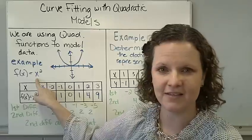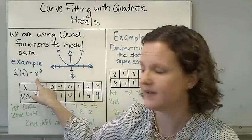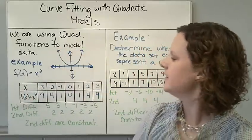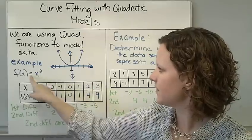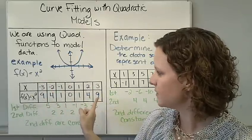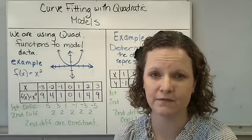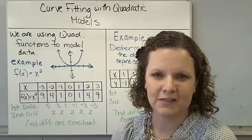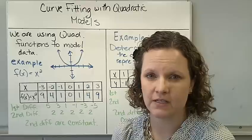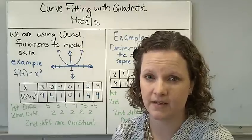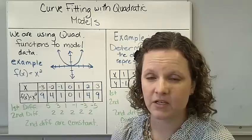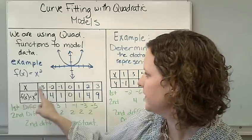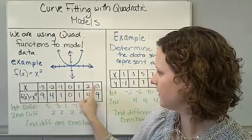As an example, we have our parent function f(x) = x². If I set up a table modeling this graph, you see that for every x that I plug into the function, I get x². We need to make sure that our x's are constant — our change in x is constant. These are constant; it's a change of 1 all the way across.